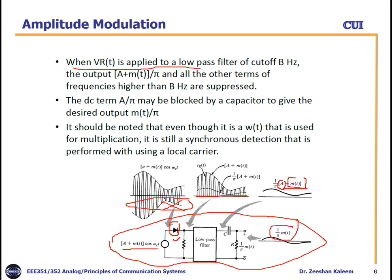When V_R(t) is applied to a low-pass filter of cutoff W Hz, we get (A + M(t))/π. The DC term A/π may be blocked by a capacitor to give the desired output M(t)/π. It should be noted that even though W(t) is used for multiplication, it is still a synchronous detection performed without using a local carrier, because instead of using a local carrier we are using W(t) for multiplication.